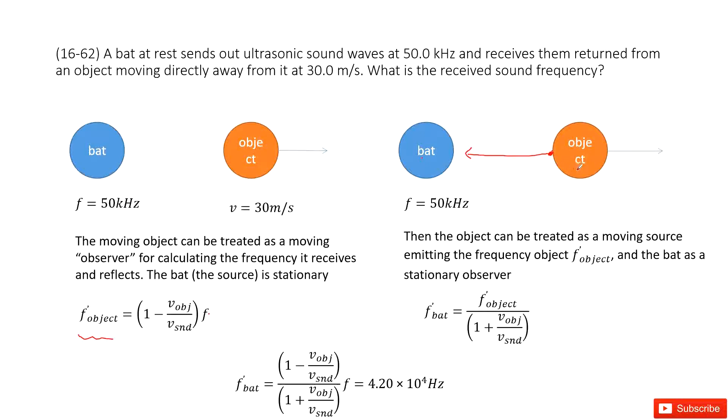So this can be the source. This is a moving source. And the bat becomes the observer. It is a stationary observer.